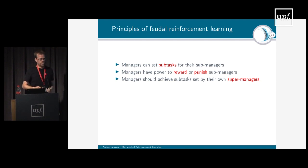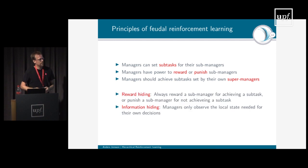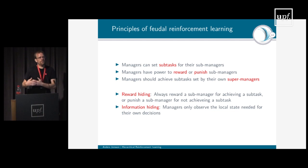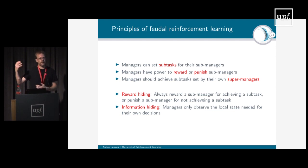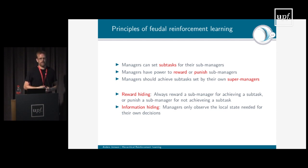There are two important principles the authors identified. The first is reward hiding: when a sub-manager is carrying out its tasks successfully, it should always be rewarded for that, even if its manager was punished for doing the wrong thing. The sub-manager was doing the right thing — it completed the task it was given — so its reward should be independent of whatever the manager was told to do. The other principle is information hiding, related to the idea of abstraction: we should only give each manager enough information to solve its task, and we don't need to give it more than that.